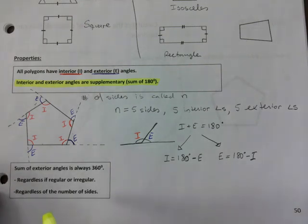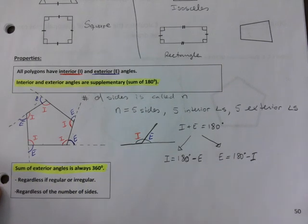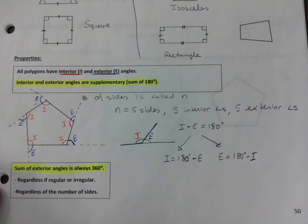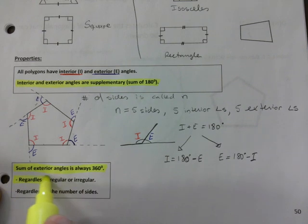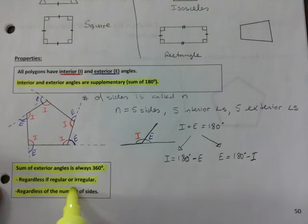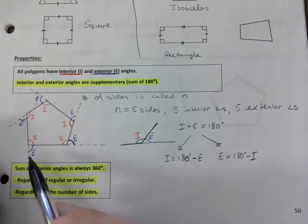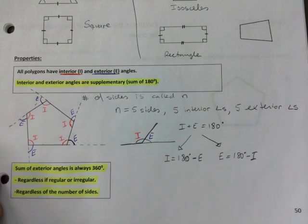Okay. And here's another cool property. The sum of exterior angles is always 360, regardless if regular or irregular, regardless of the number of sides. That is pretty cool. So if we could, it could have 99 sides or 500 sides. It doesn't matter. If you were to add up all the exterior angles, it would always add up to 360.